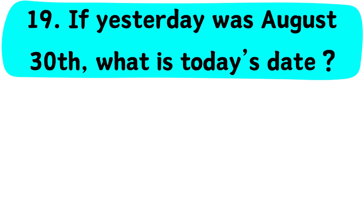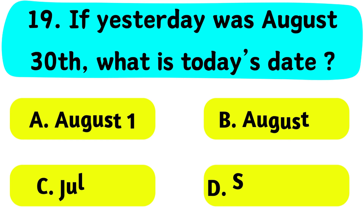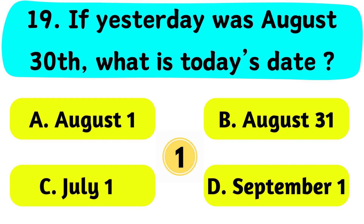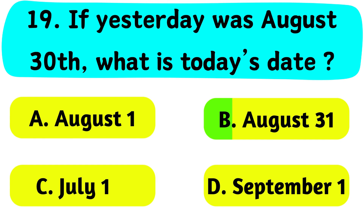Question No. 19. If yesterday was August 30th, what is today's date? The correct answer is Option B. August 31.